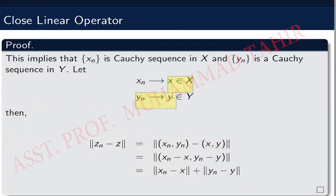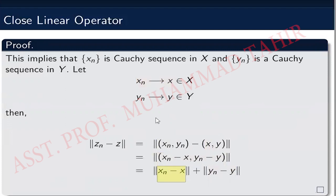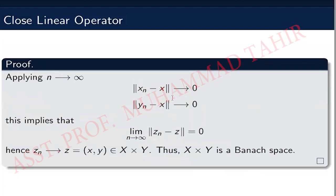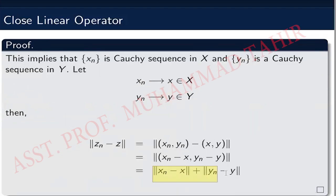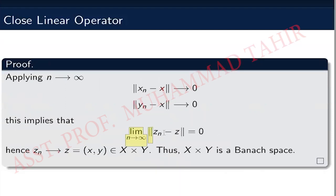Since X and Y are Banach spaces, x_n converges to some x in X and y_n converges to some y in Y. We can then define z as the ordered pair (x, y), which is an element of X cross Y. Consider the norm of z_n minus z: substituting values, z_n is (x_n, y_n) and z is (x, y), so the norm equals the norm of x_n minus x plus the norm of y_n minus y. Since x_n converges to x and y_n converges to y, both terms approach zero, so z_n minus z approaches zero. This shows z_n converges to z, so X cross Y is a Banach space.